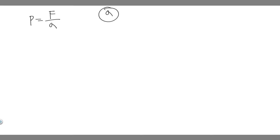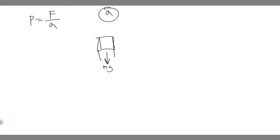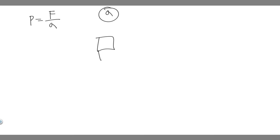Let's start with A. Think about the force being applied — we have this chair with four legs, and we're trying to solve for just one leg. The force being applied is just the force due to gravity, the weight force, which is mg. We know the total mass is 66 kg on all four legs, but we want to account for just one leg, so we divide by four. So the force here is going to be one-fourth mg.